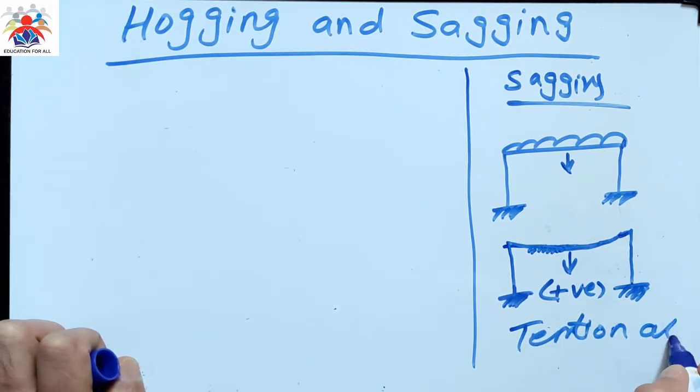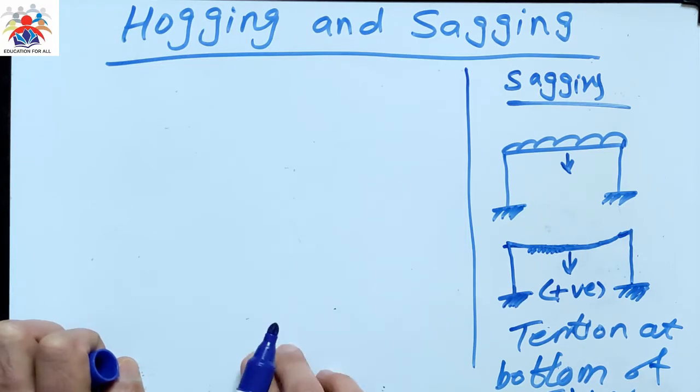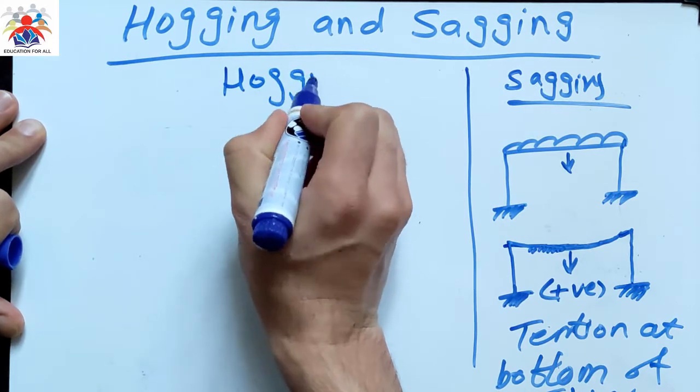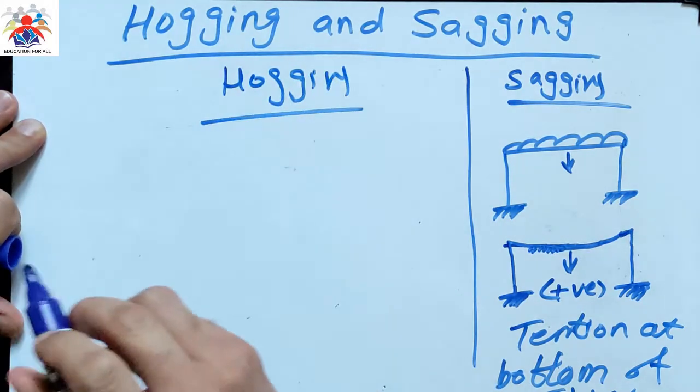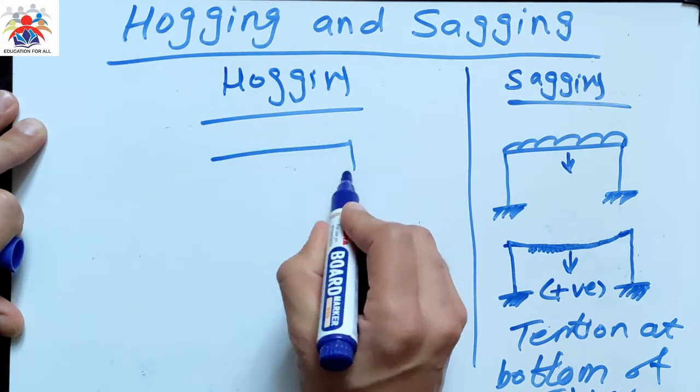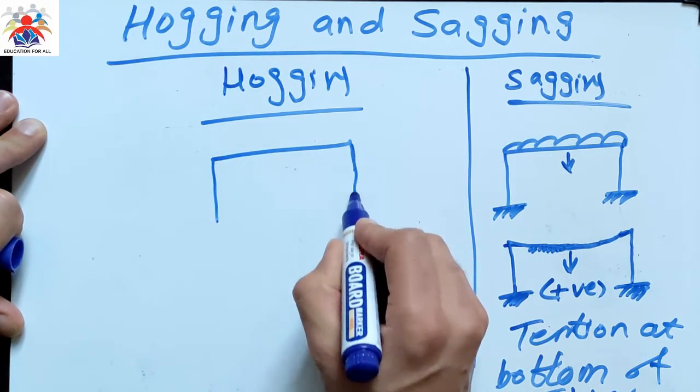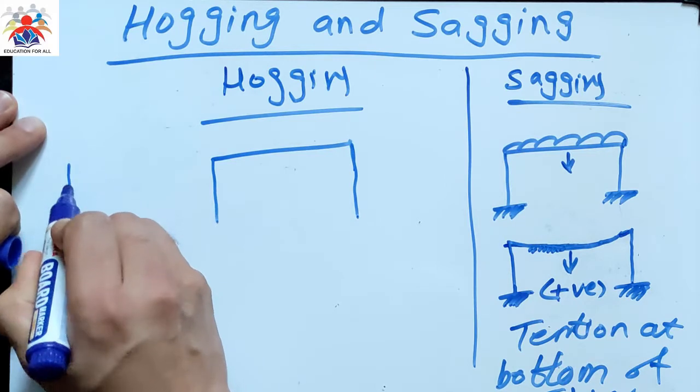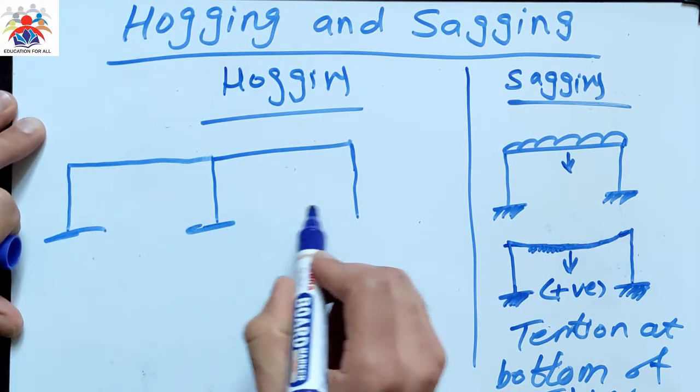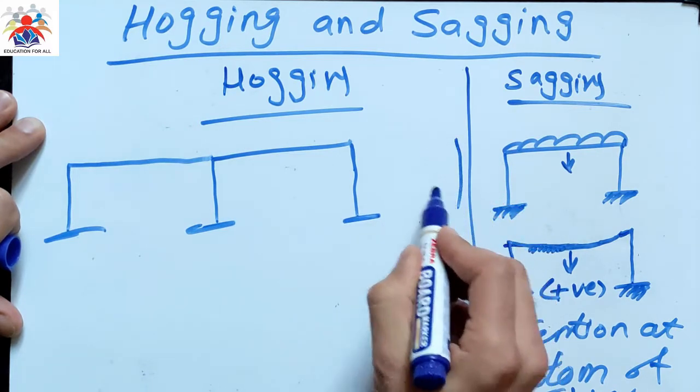Now move on to the next one, hogging. What is hogging? Imagine we have a beam here, one beam, and the system of beam is continuous. It's continuous. Imagine four or five beams, let's say, or even more.